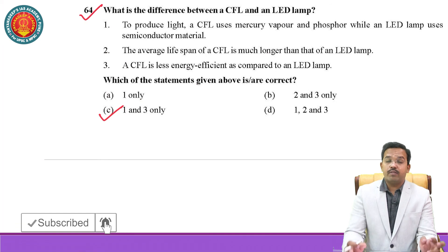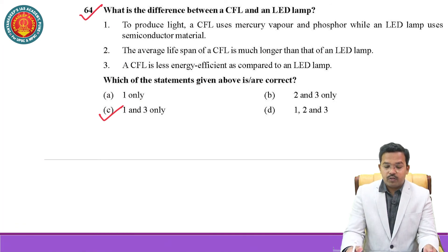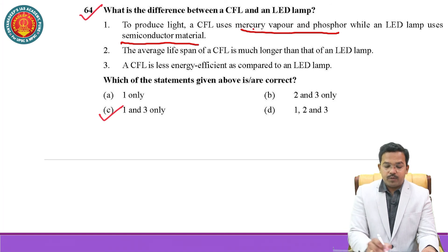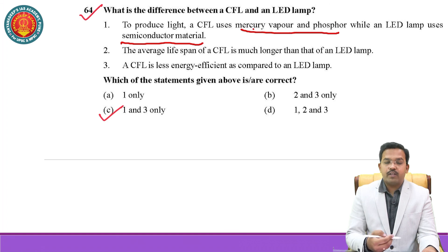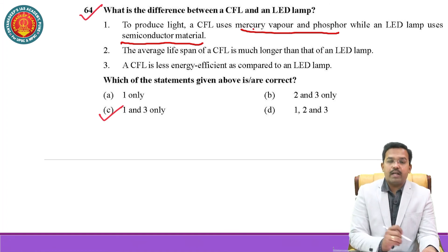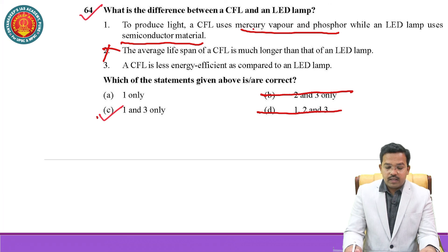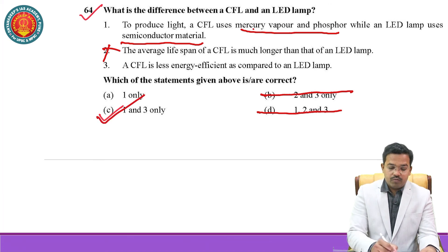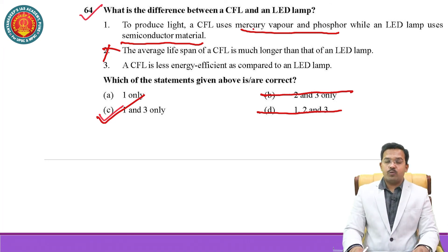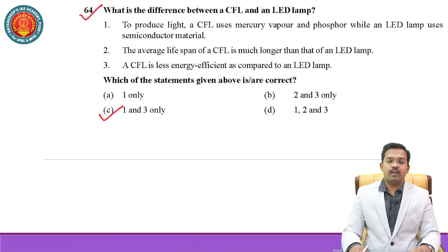Question number 64: What is the difference between compact fluorescent light (CFL) and LED lamp? CFL uses mercury vapour and phosphorus to produce light, while LED lamp uses semiconductor material. The second statement — that the average lifespan of CFL is much longer than that of LED — is wrong, as any student can confirm LED lasts longer. Since the second statement is wrong, options containing it are eliminated. Third statement — a CFL is less energy efficient as compared to LED lamp — is correct. So statements one and three are the correct options.